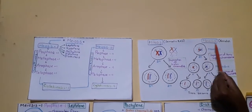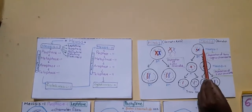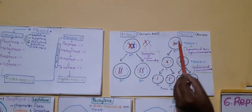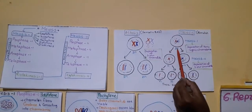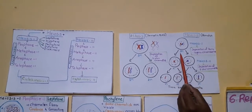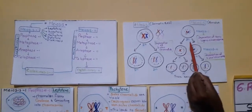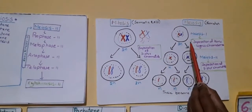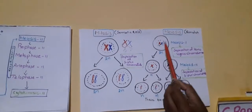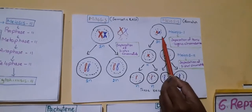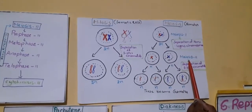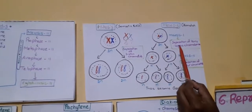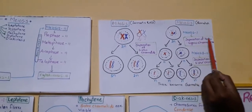Let us now see what happens in meiosis. Meiosis takes place in gametes. Imagine a parent cell where chromosomes are arranging in pairs — homologous chromosomes — and the parent cell consists of two sets of chromosomes (2N). These chromosomes make duplicate copies of themselves, forming sister chromatids. Meiosis is divided into two types: Meiosis I and Meiosis II. The major step to remember in Meiosis I is the separation of homologous chromosomes.